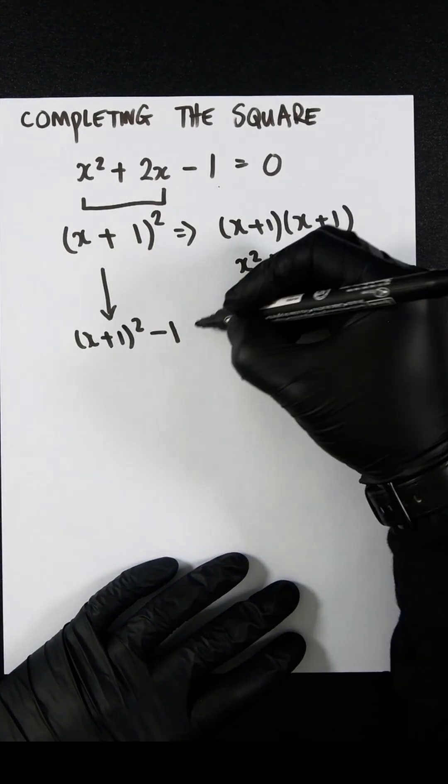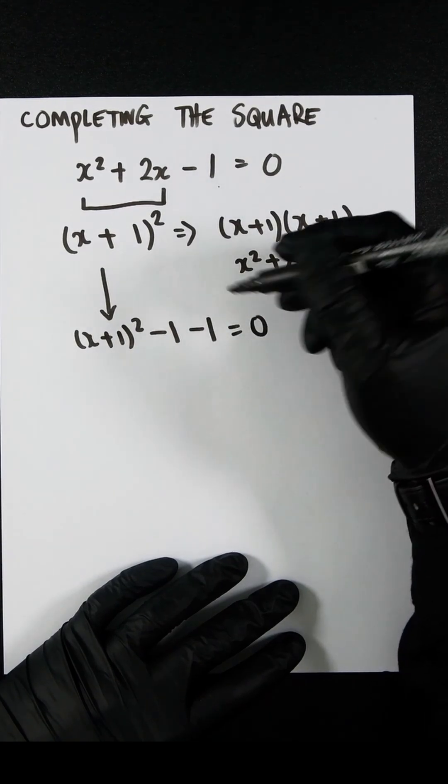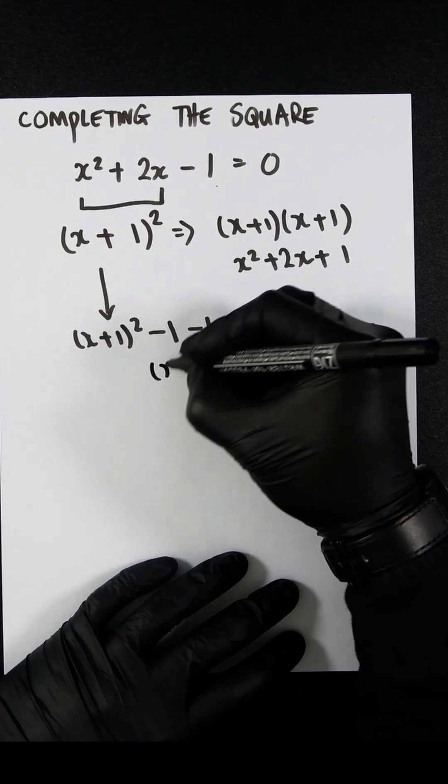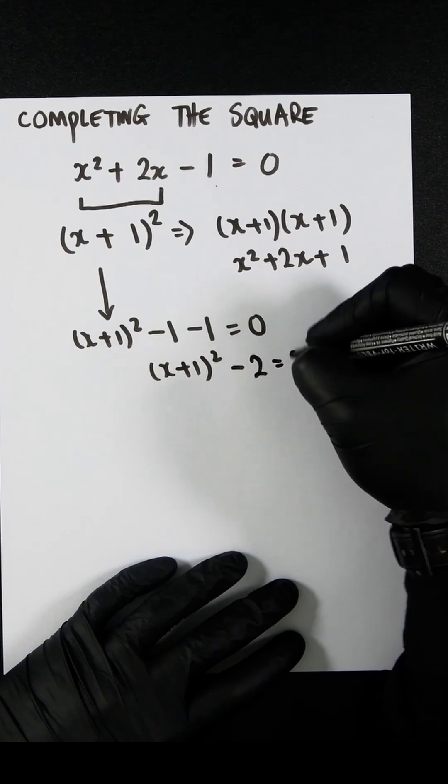And then remember, we have a minus one here. So now let's sort this out. Obviously, minus one minus one is minus two. So you're going to have (x + 1)² - 2 = 0.